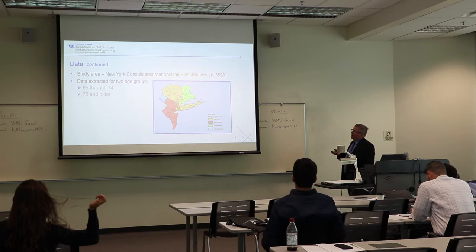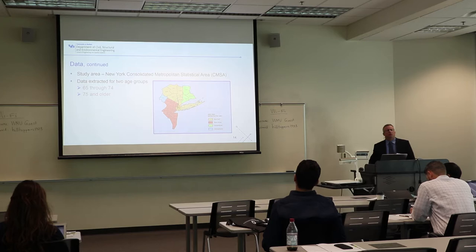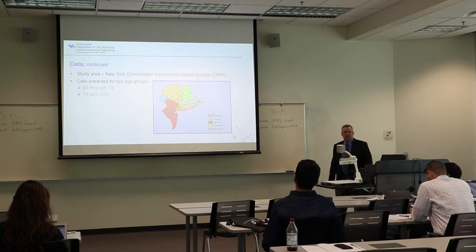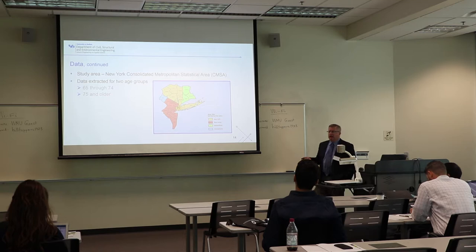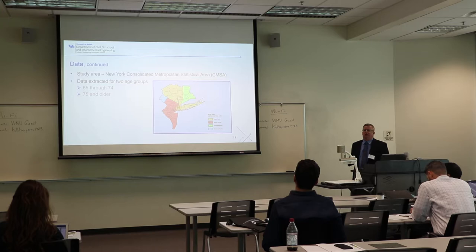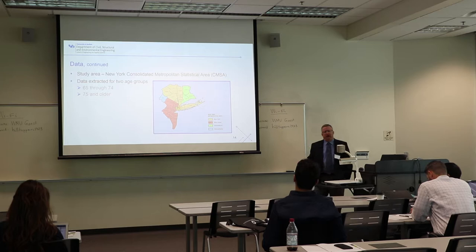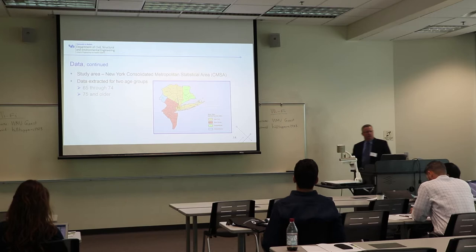We extracted data for two different age groups: 65 through 74, termed the young seniors, and 75 and older, termed the old seniors. The data was an unbalanced panel by individuals — for instance, a household with two older adults where one had five observations and the other had two observations. So it's by individual and unbalanced.